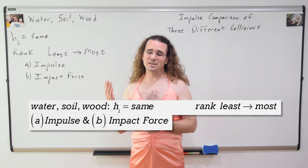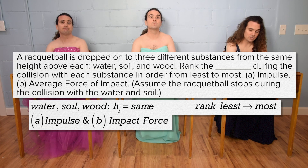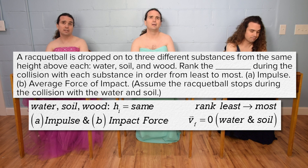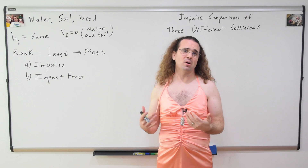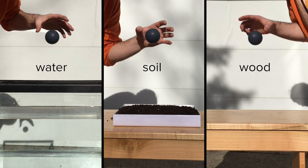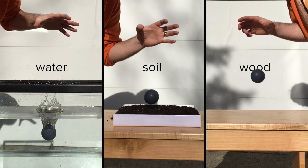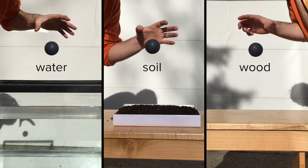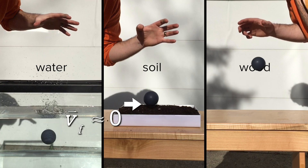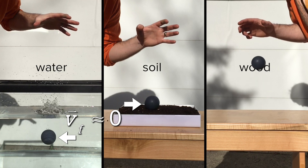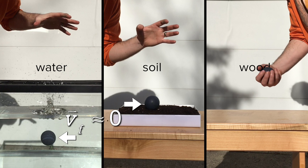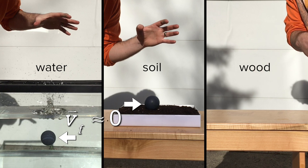Assume the racquetball stops during the collision with the water and soil, so the final velocity for water and soil is zero. I know the racquetball doesn't quite stop during its collisions with the water and the soil; however, the final velocity of the ball is very close to zero, and in a typical multiple choice question the ball would be considered to stop. That is what we are going to assume in this problem.